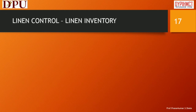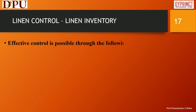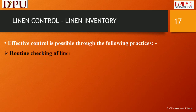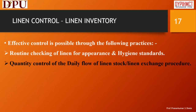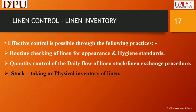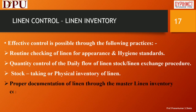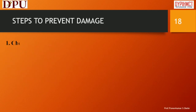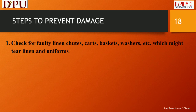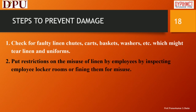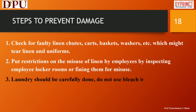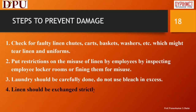Linen control and linen inventory: Effective control is possible through routine checking of linen for appearance and hygiene standards; quantity control of the daily flow of linen stock through the linen exchange procedure; stock taking or physical inventory of linen; and proper documentation through the master linen inventory control sheet. Steps to prevent damage include checking for faulty linen chutes, carts, baskets, and washers which might tear linen and uniforms; restricting misuse of linen by employees; ensuring laundry is carefully done without excess bleach; exchanging linen strictly on a one-to-one basis; and ensuring employees do not wipe spills with white linen.